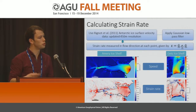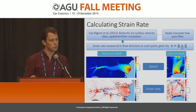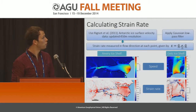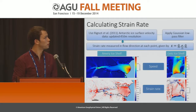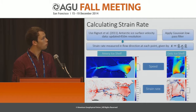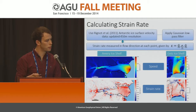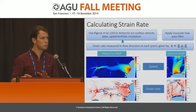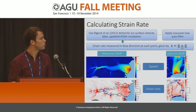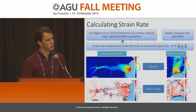To do this, we use the Rignot et al. ice surface velocity data. We use the updated version, where velocity measurements are given on a 400-metre grid resolution. To this data, we apply a Gaussian low-pass filter with a standard deviation of four grid cells, or 1.8 kilometres. The purpose of this is to smooth sharp variations between satellite swath boundaries.